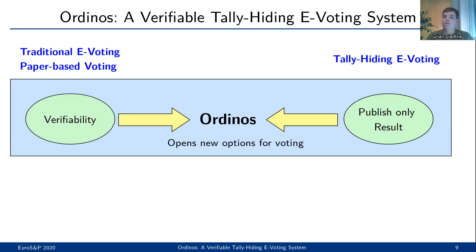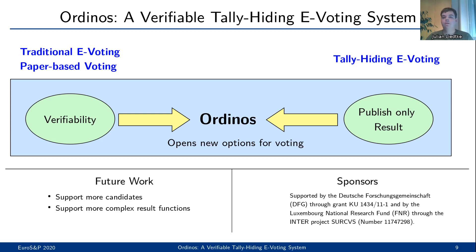Let me do a quick recap. I presented you Ordinus, which is the first provable, secure, verifiable and tally-hiding e-voting system. With that, it allows for new options in voting which simply weren't possible before. In the future, we want to extend Ordinus to support an even larger number of candidates and support more complex result functions. And with that, I conclude my talk and want to thank you for your attention.